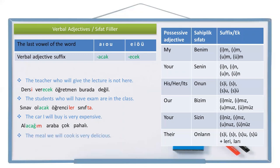And the last example for this suffix: the meal we will cook is very delicious. Meal is yemek. Cook is pişir, verbal adjective suffix: pişirecek. Who will cook? We will cook — it is our cooking — so I add the possessive adjective suffix for 'we': pişireceğimiz yemek, the meal we will cook. Is very delicious — çok lezzetli.